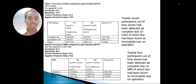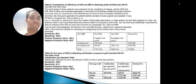For accuracy of MRI compared to the gold standard, 24 participants out of 47 had been detected as complete tear on MRI, of which 2 had been found as incomplete tear on operation.